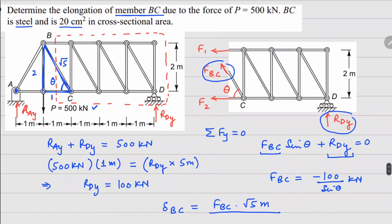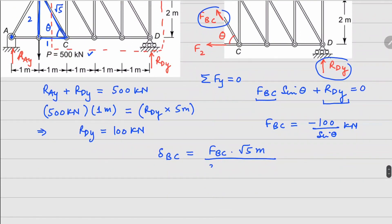The elastic modulus for steel is 205 GPa and the cross-section area is 20 centimeter square. If I substitute these numbers, the value of delta BC comes out to be a negative number which is 0.61 millimeters.